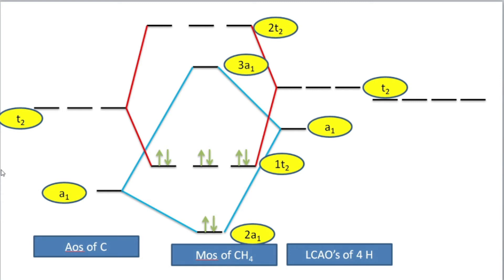Orbitals of the same symmetry combine. The A1 orbital from carbon and the A1 group orbital from hydrogen combine to produce 2A1 (bonding) and 3A1 (anti-bonding). The 1A1 corresponds to the 1s orbital of carbon, which is non-bonding. T2 from carbon interacts with T2 from the hydrogen LCAOs to produce 1T2 (bonding) and 2T2 (anti-bonding). In methane, there are 8 total electrons — 2 in 2A1 and 6 in 1T2 — giving 4 bonds.